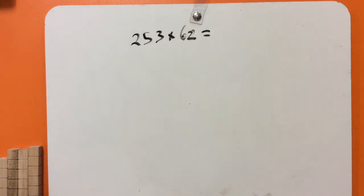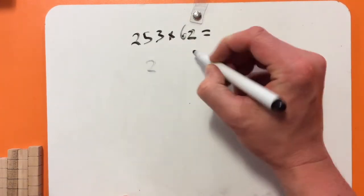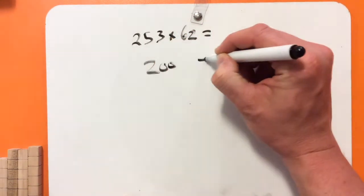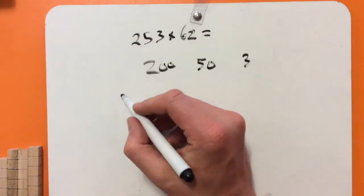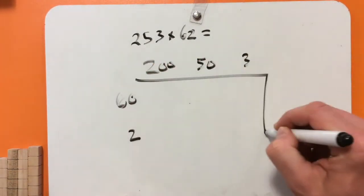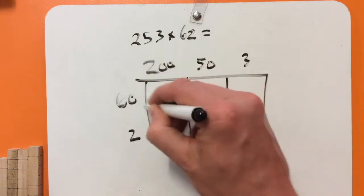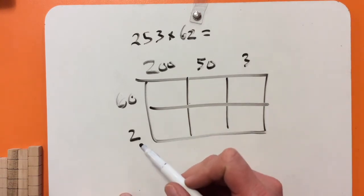253 times 62 might seem insanely difficult, but if you break it down with the way I'm about to show you, these problems are actually quite simple, although they might take a little bit of time. So basically, you want to make a grid. Across the top, I'm going to write 200, 50, and 3, breaking down my 253. Across the side, I'm going to write 60 and 2, and I'm going to draw a grid here. In each box, I'm going to multiply each of the numbers by each other.